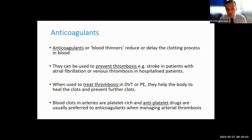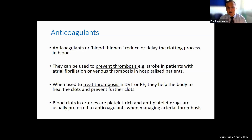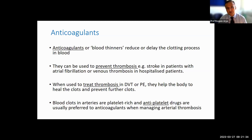Nearly half the cases of venous thromboembolism are associated with being in hospital, either having surgery or with medical illness, and anticoagulation is very effective in preventing those cases of hospital-associated thrombosis. When used to treat thrombosis — for instance, in deep vein thrombosis or pulmonary embolism — anticoagulants help the body to heal the clots and prevent further clots. They do not actually dissolve the clots, but help the body to resolve the thrombosis.